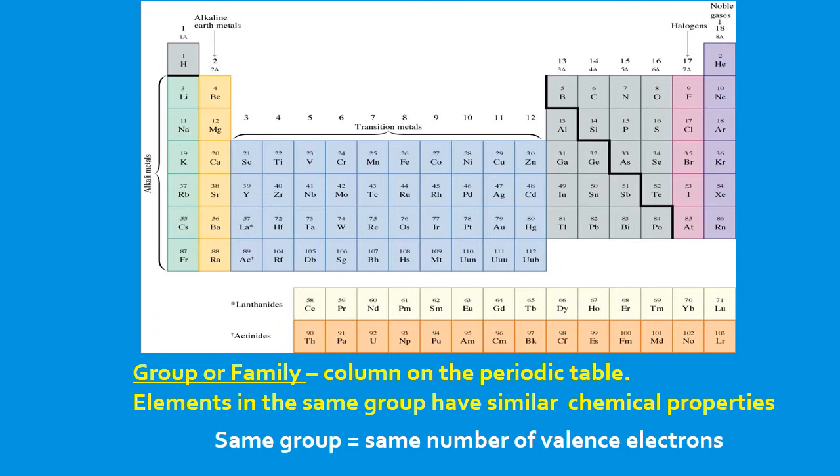Elements in group 18 or group 8A, they're called the noble gases. They all have eight valence electrons. All these here will have eight valence electrons, except helium, which has two. When we look at the arrangement of electrons in the atom, we'll see why it's placed in that group, even though it only has two valence electrons.